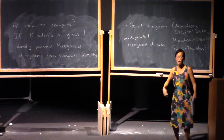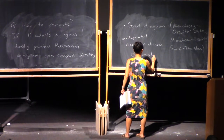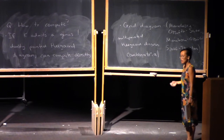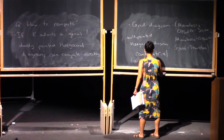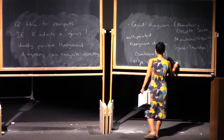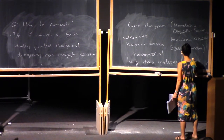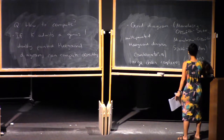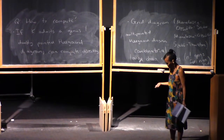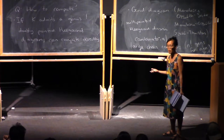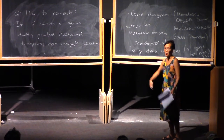The advantage of grid diagrams is that things become entirely combinatorial, which is great — you can tell a computer to do it. The downside is that the chain complexes you get are very large. Your knot is drawn in an n-by-n grid, and the number of generators you get is n factorial. For the trefoil, you need a 5-by-5 grid, so that's already 120 generators. For the figure eight, you need a 6-by-6 grid, and then it just gets worse from there.